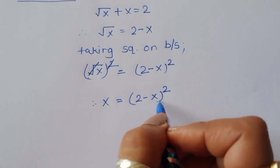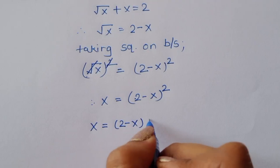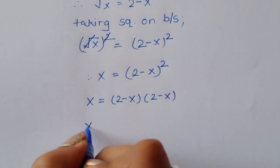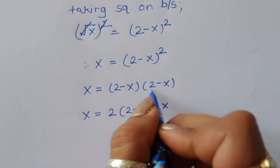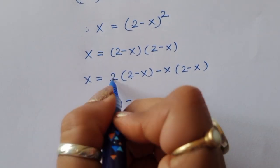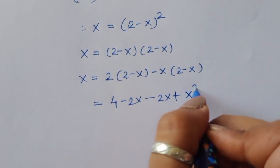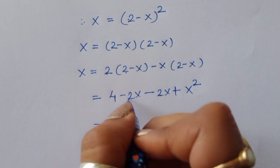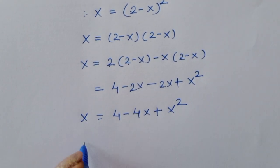Now (2 - x)² means (2 - x) times (2 - x). Multiplying out: 2 times (2 - x) minus x times (2 - x) gives 4 - 2x - 2x + x², which equals 4 - 4x + x².